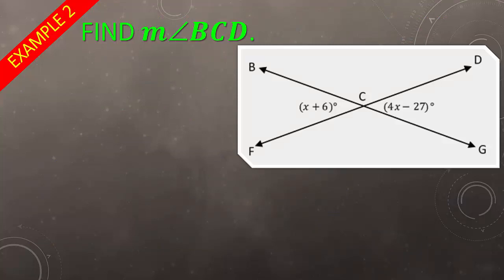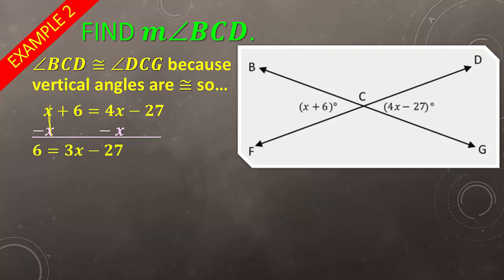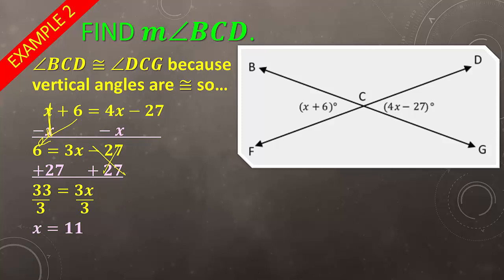Last example — we need to find the measure of angle BCD. We're given this diagram. You can see that FD and BG create vertical angles, which means that X plus 6 is equal to 4X minus 27, because vertical angles are congruent. Subtract X from both sides — that leaves you with 6 equals 3X minus 27. Add 27 to both sides and you get 33 equals 3X. Divide by 3, and you get X equals 11.